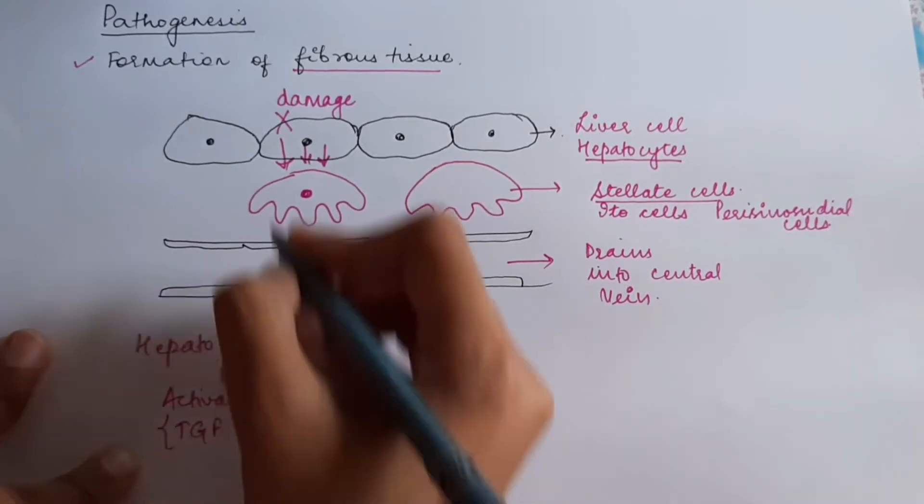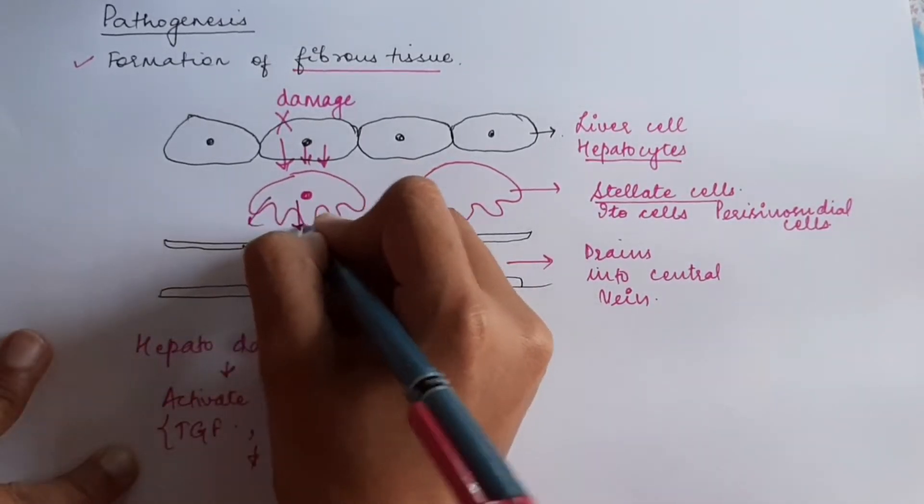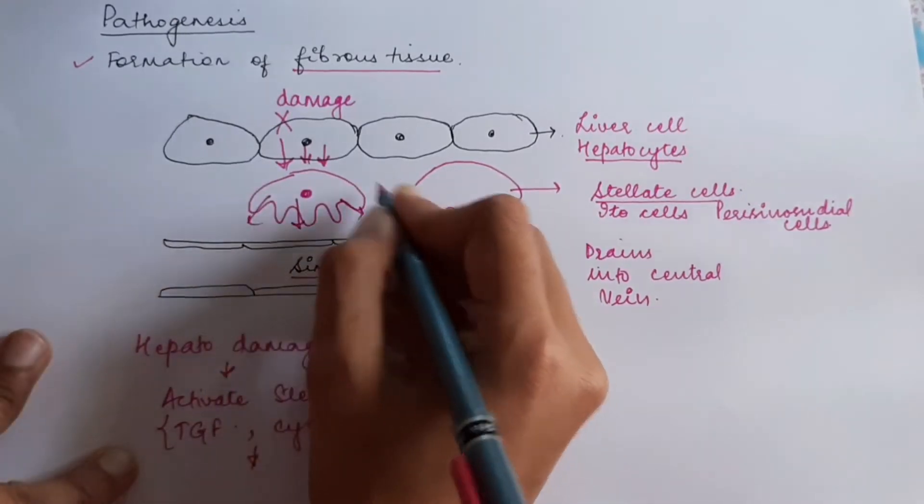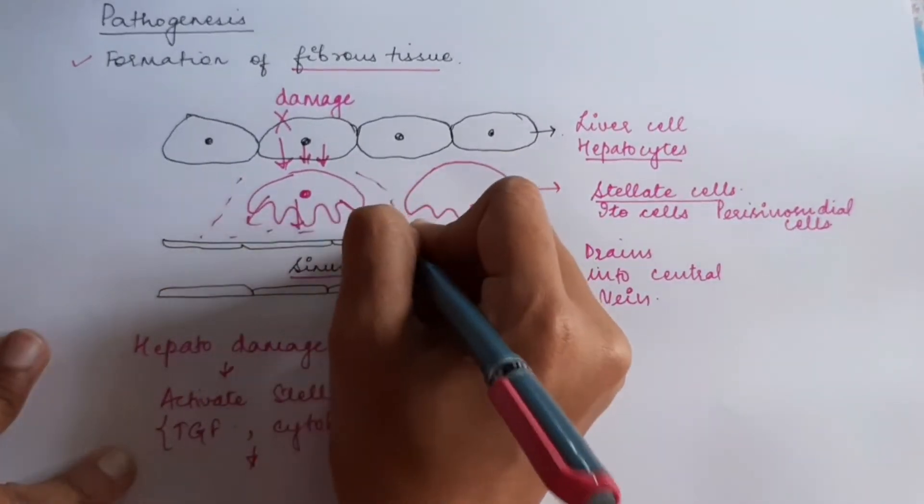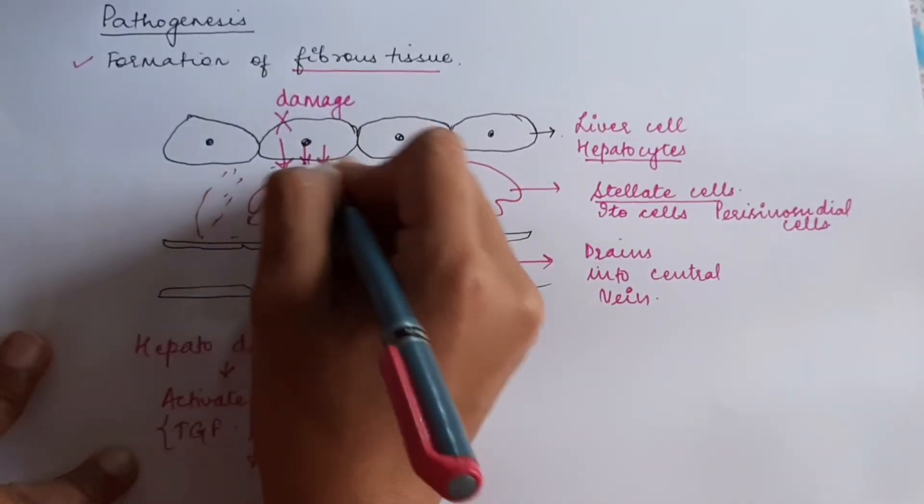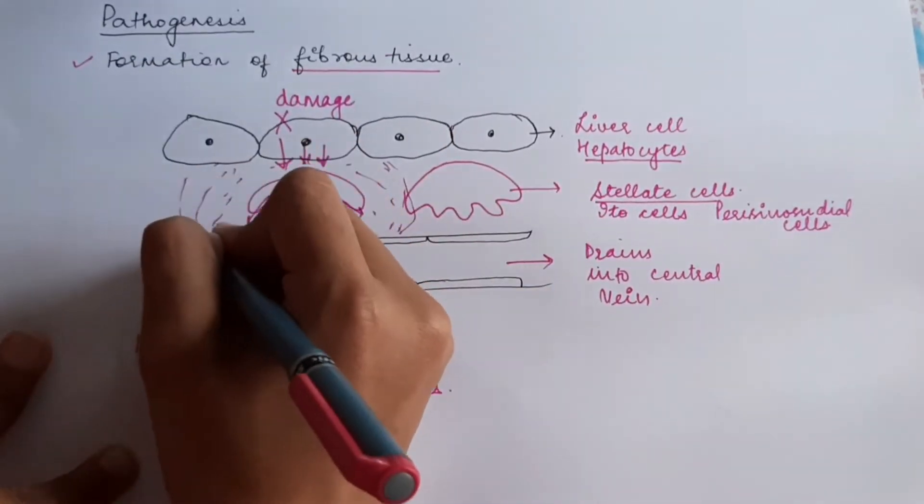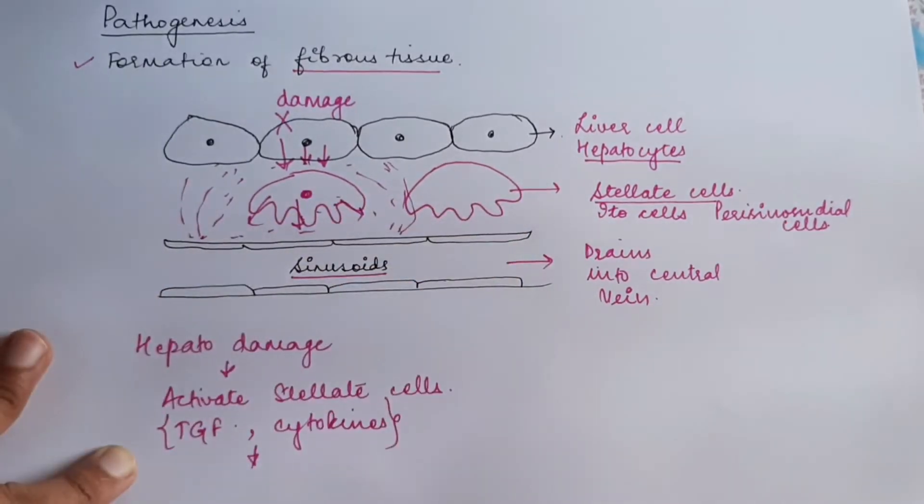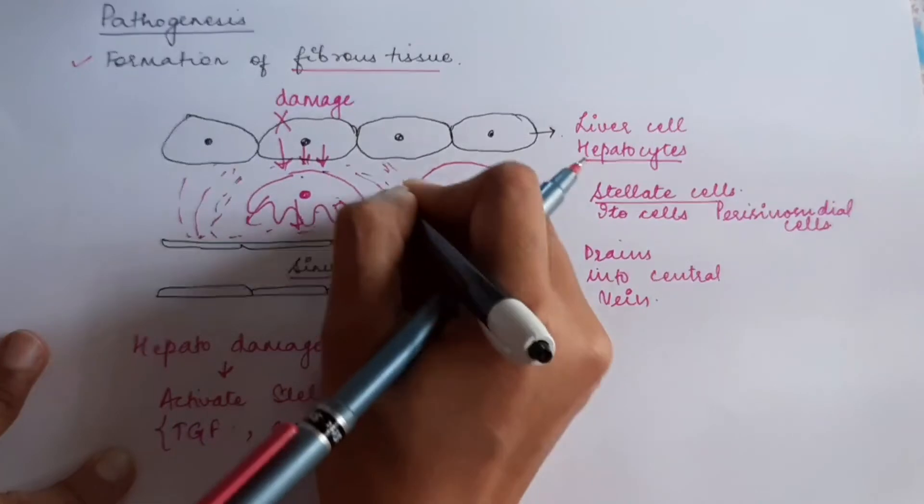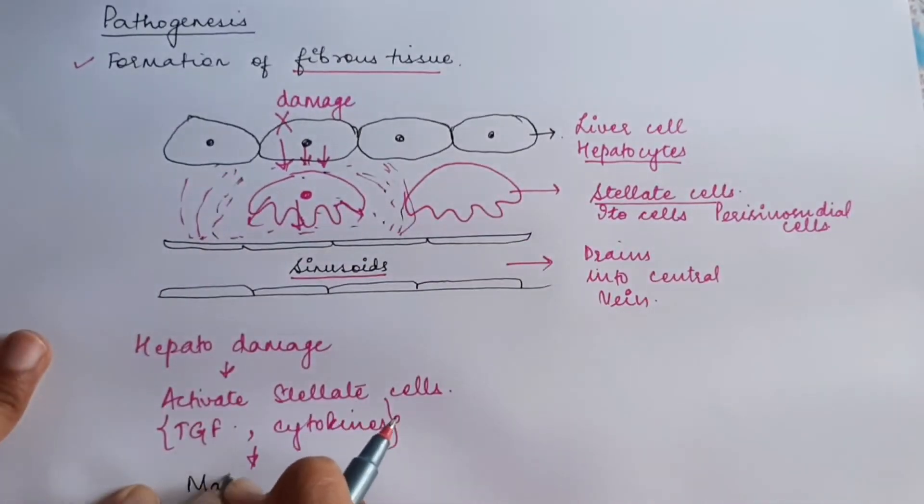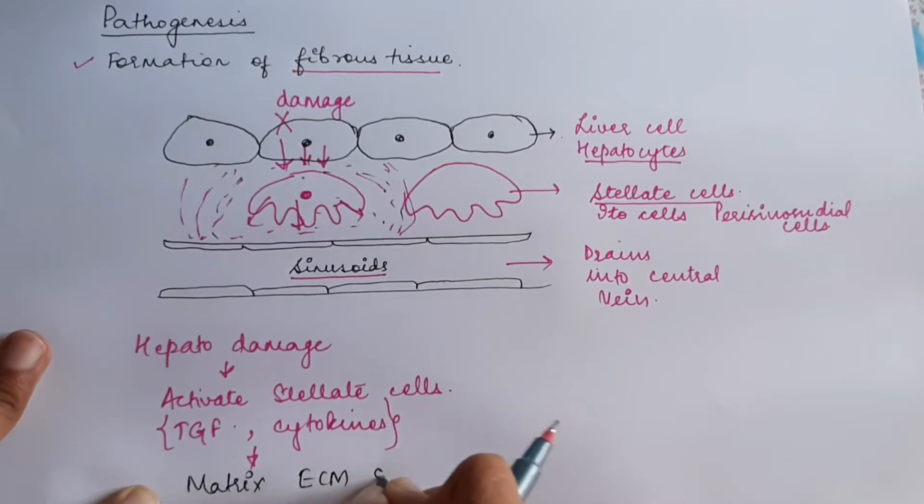This will start secreting substances outside, which will result in formation of a matrix around it. Fibrous matrix formation will start taking place here. So, the formed matrix will be called ECM, that is extracellular matrix.